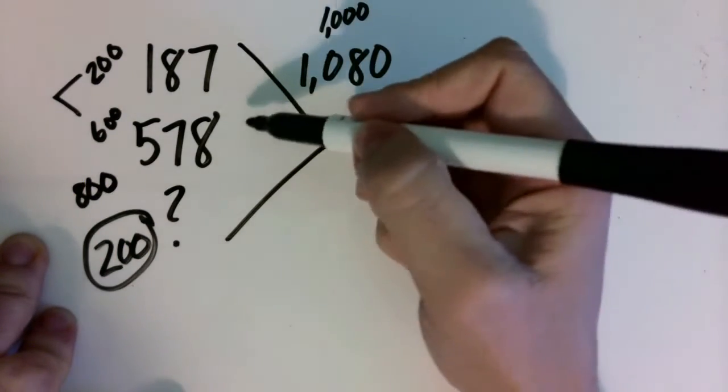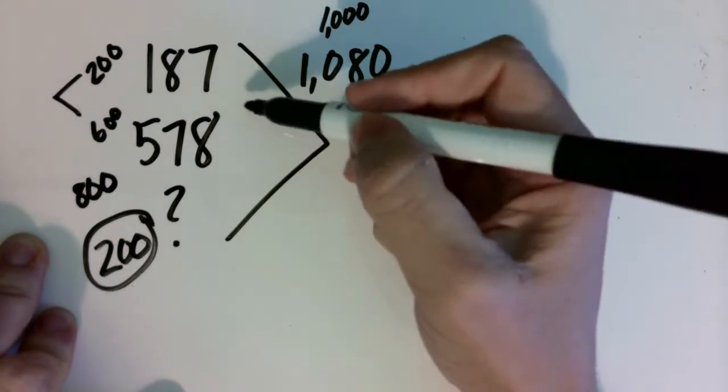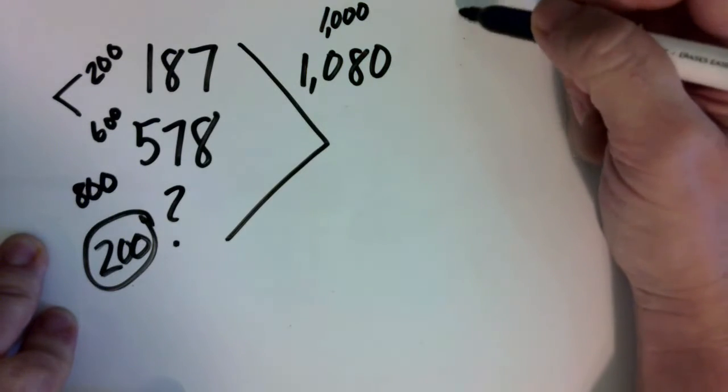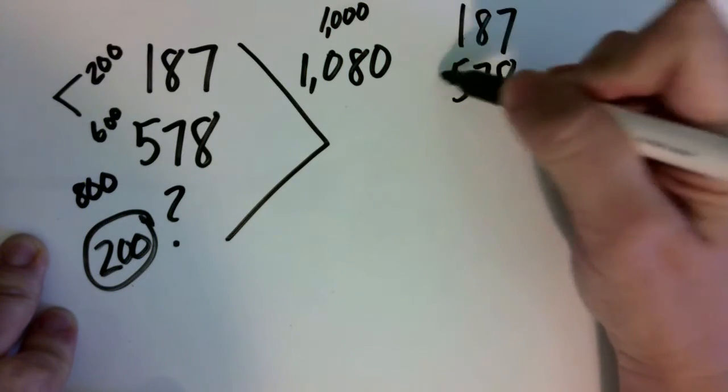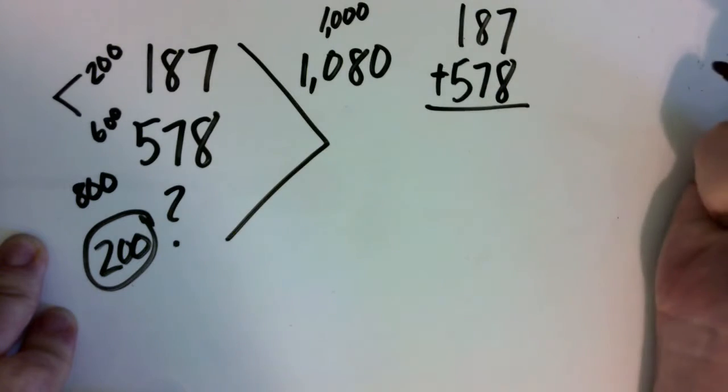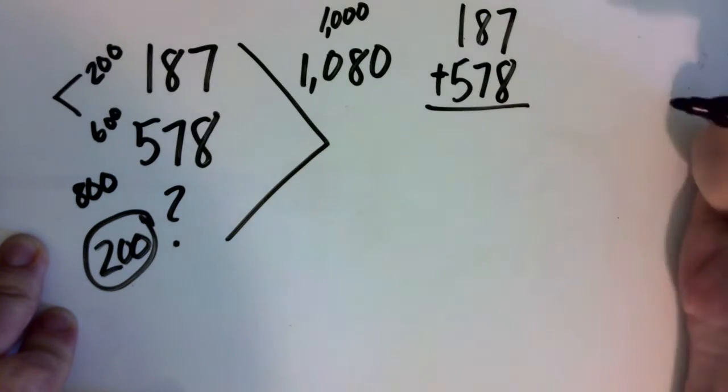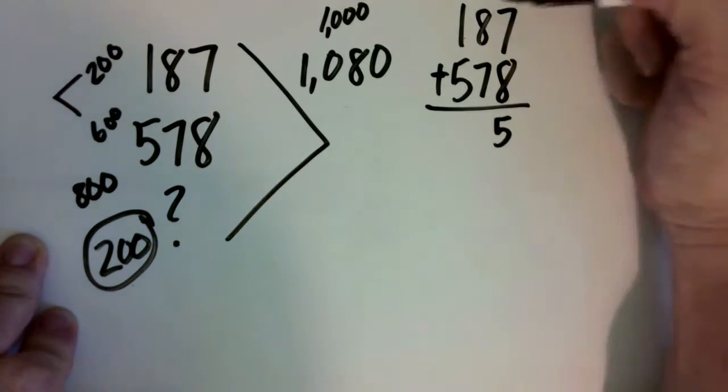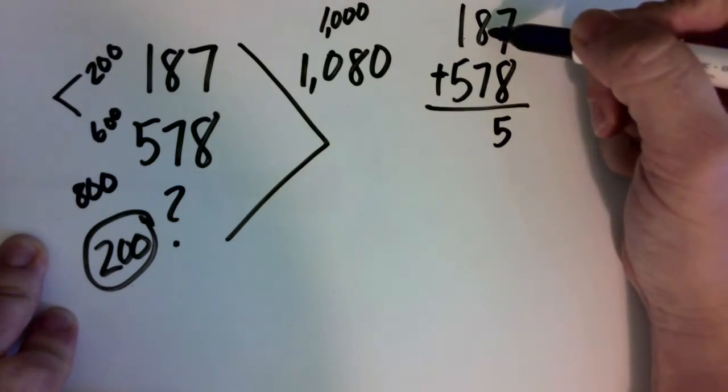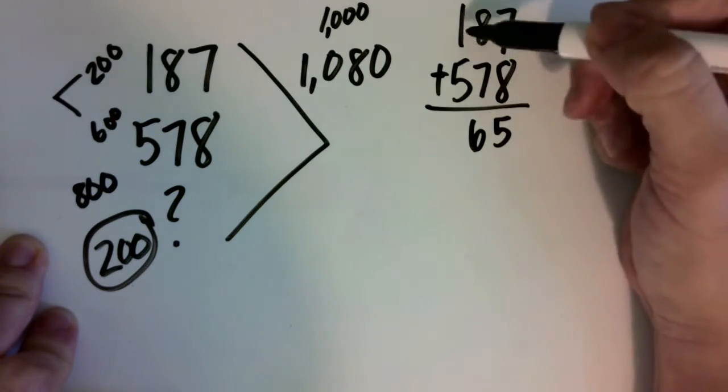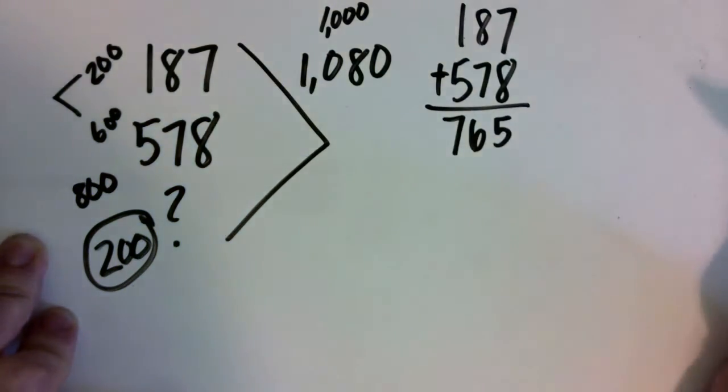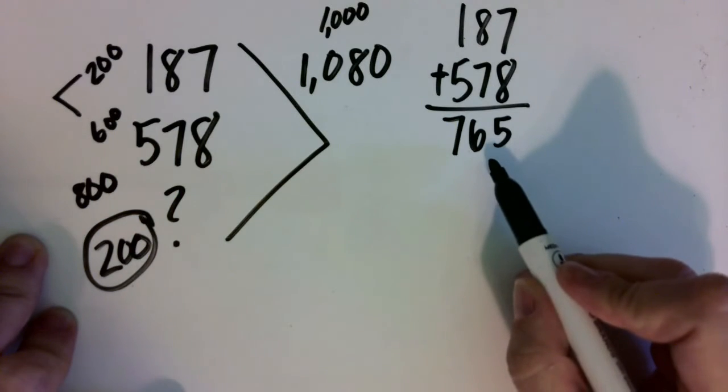First, I need to add together the amount that I know. $187 plus $578. $8 plus $7 is $15, plus $1 is $16. $5 plus $1 plus $1 is $7. So I know they spent $765.